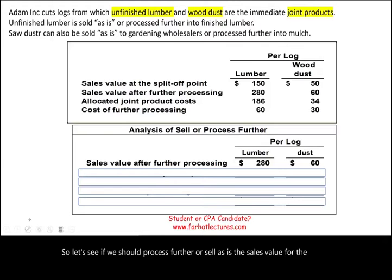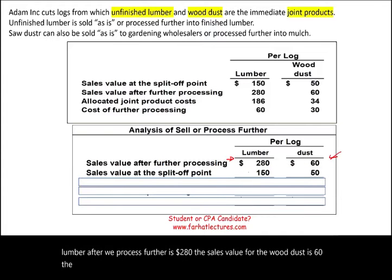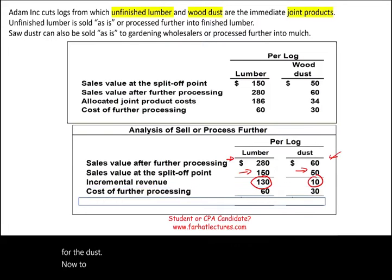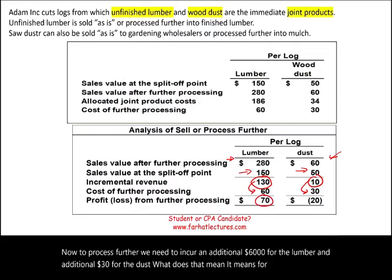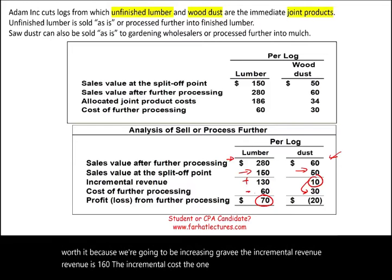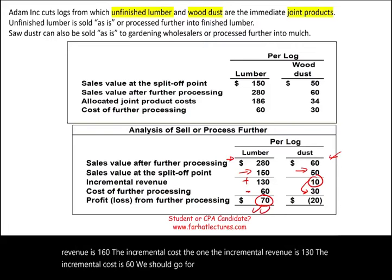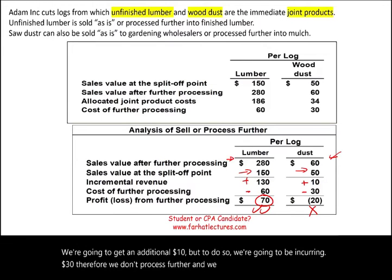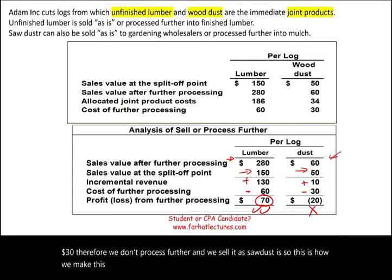For lumber: sales after further processing is $280; sales at split-off is $150; incremental revenue is $130. Cost of further processing is $60. Since $130 > $60, we should process the lumber further. For wood dust: sales after further processing is $60; sales at split-off is $50; incremental revenue is $10. Cost of further processing is $30. Since $10 < $30, we should not process further — sell the wood dust as is.